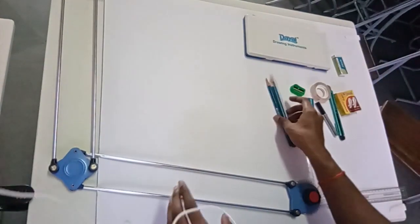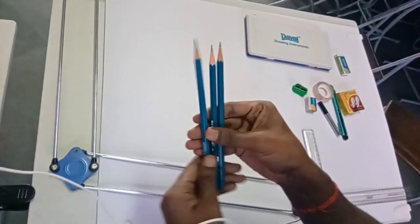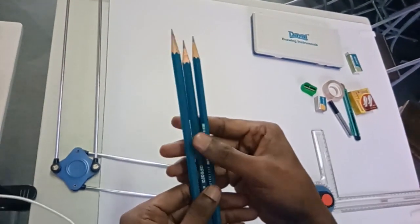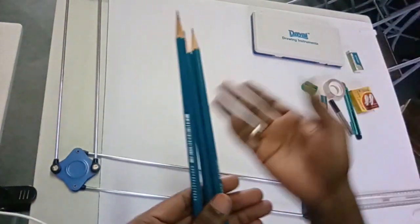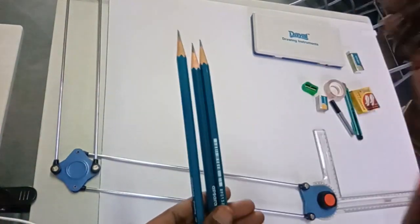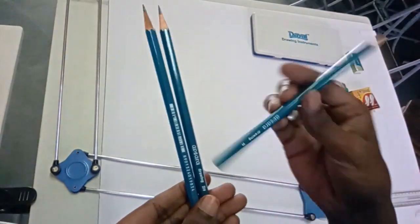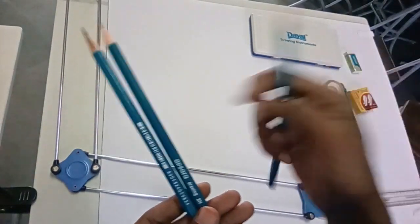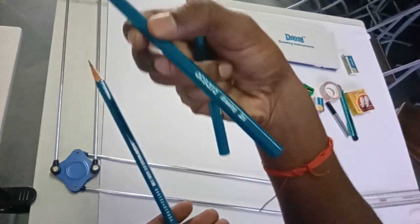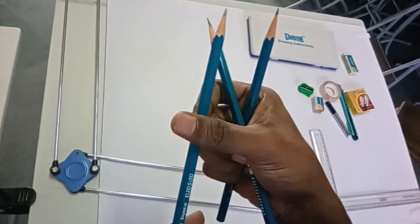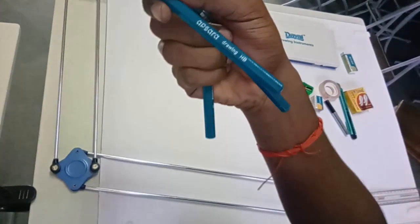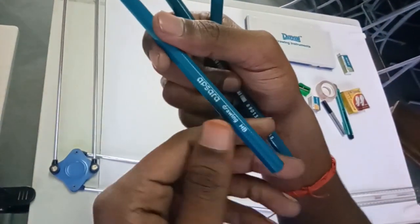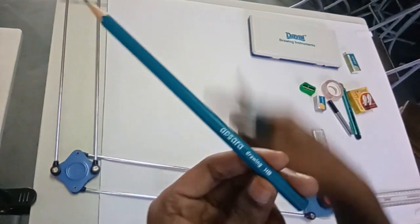The final equipment we are going to use is three pencils. They may look the same but these are different shades of pencils. I will make a separate video to explain the different shades. We have a 2H pencil, an H pencil, and an HB pencil.